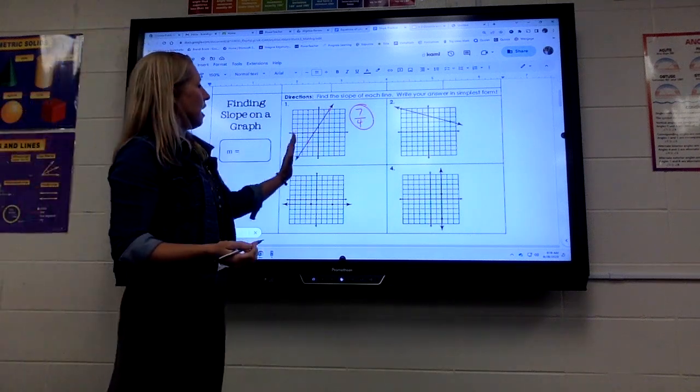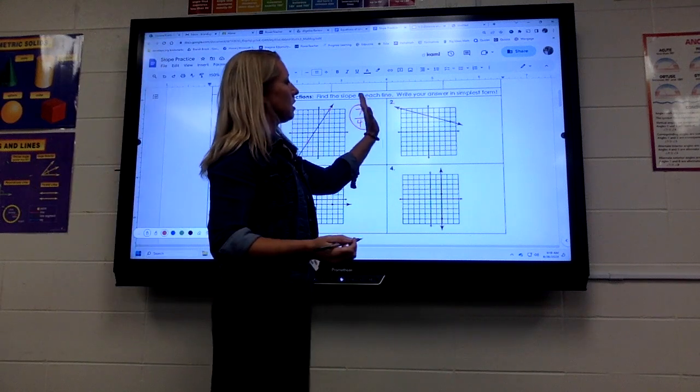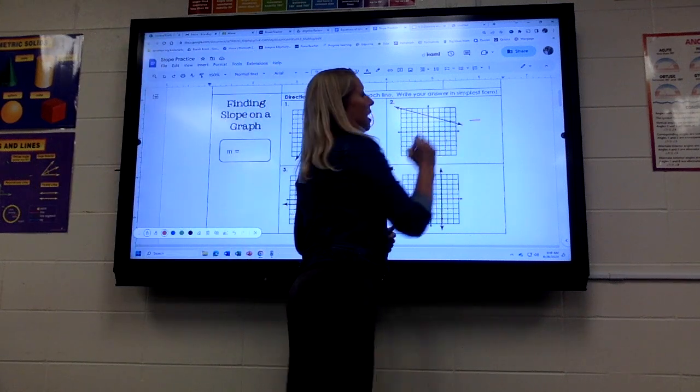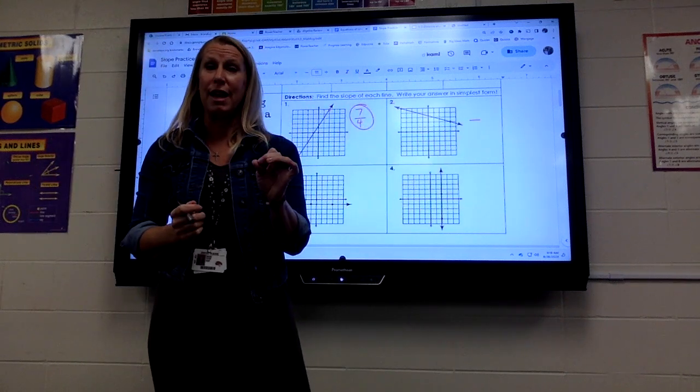Now, this line was going up, so it's a positive slope. Notice this line is going down, so it's going to be a negative answer. So make sure you put a negative sign there.